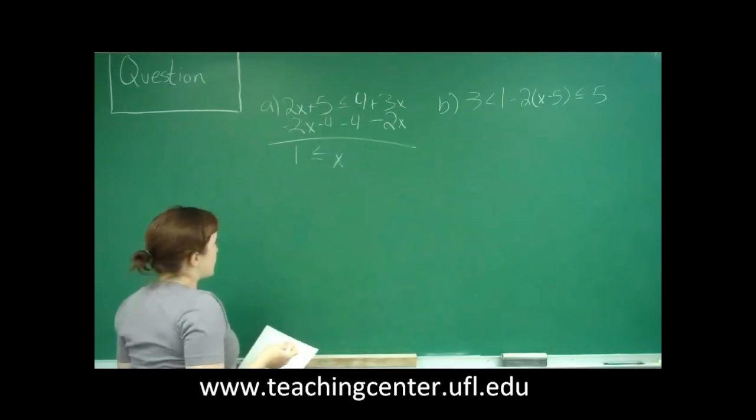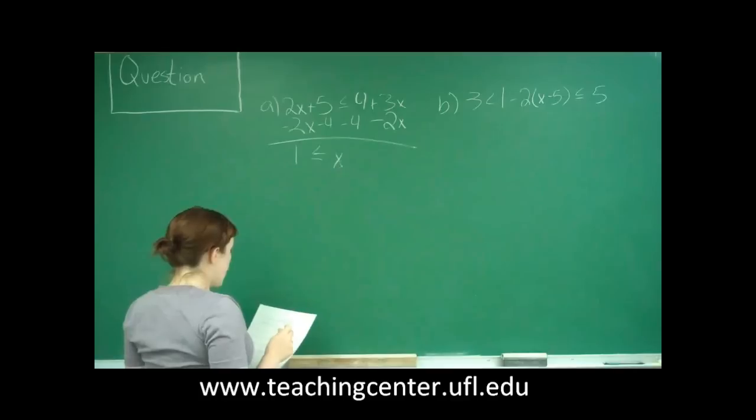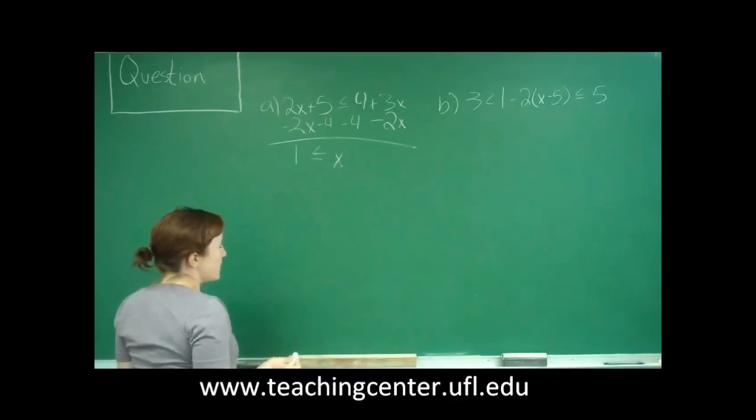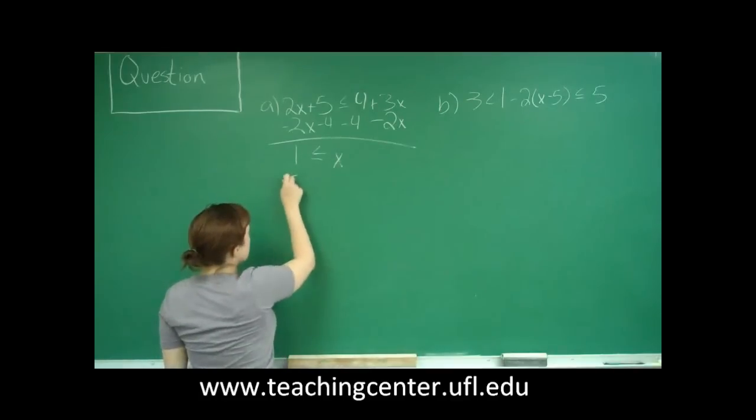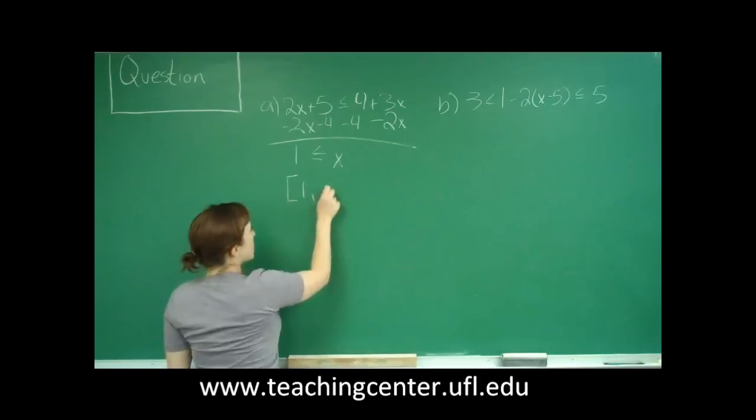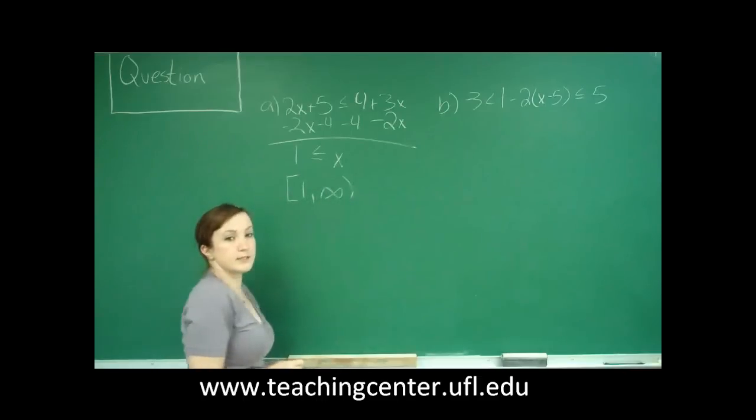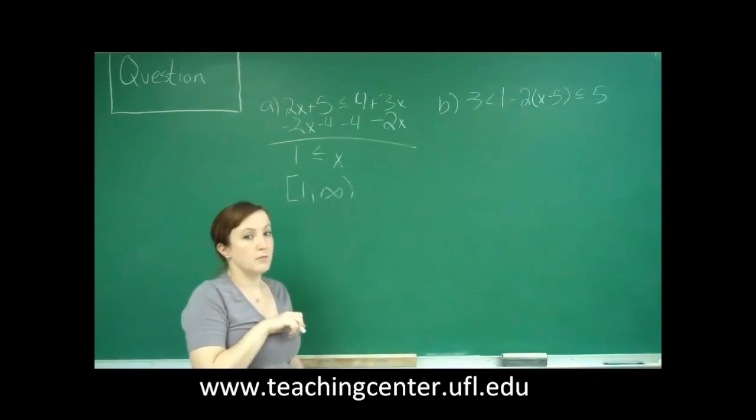So it just says that x has to be greater than or equal to 1. And to write that as an inequality in interval notation, I have a bracket 1, comma, positive infinity, parentheses. So that is part A.